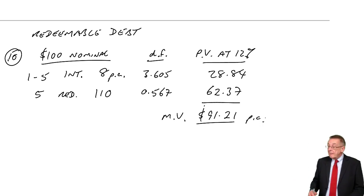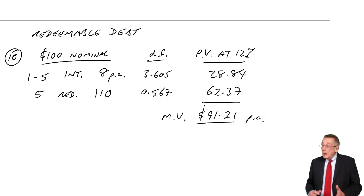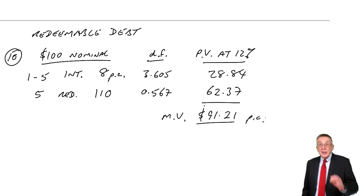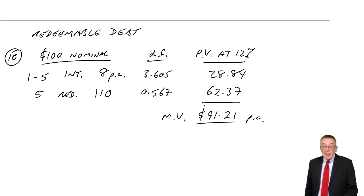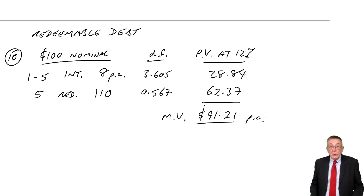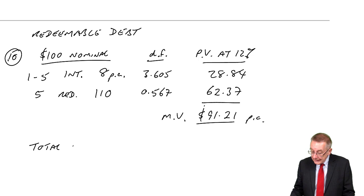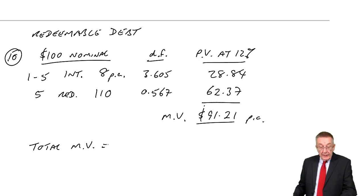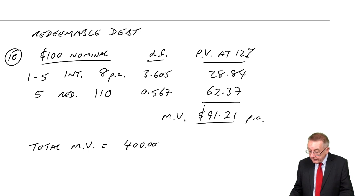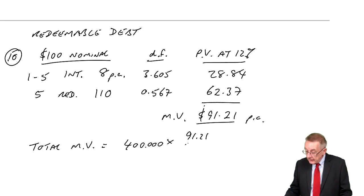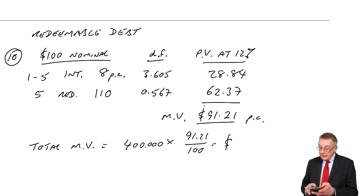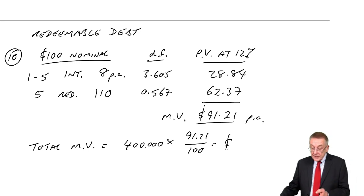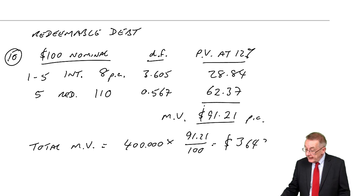Normally we're working out the market value of one unit — so $100 nominal has a market value of $91.21. If they want the total market value of all debt in issue: there's 400,000 nominal value, and at $91.21 for every $100, the total market value of the debt in issue today would be $364,840.